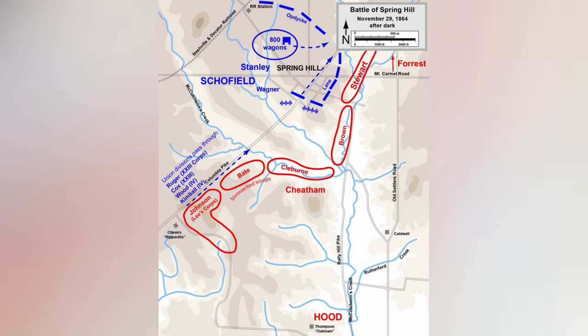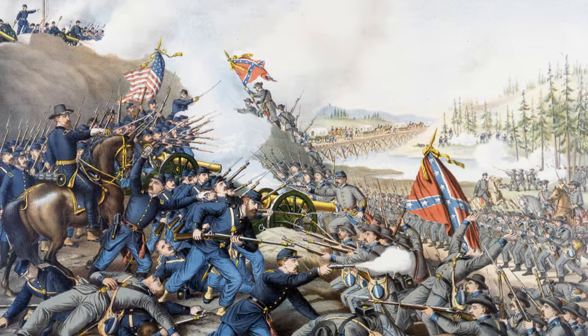As darkness fell, the battle came to an uneasy halt. Miscommunication within the Confederate High Command played a crucial role that night, allowing Schofield's Union forces to slip away. Realizing the missed opportunity, Hood pursued Schofield, leading to a major assault the following day at Franklin.